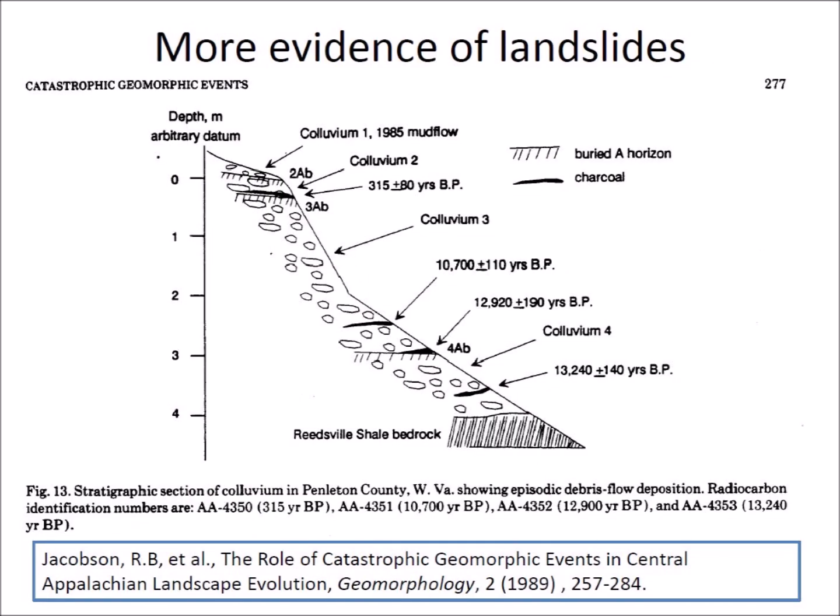The ice boulders that hit solid ground disintegrated explosively with energies equivalent to 13 kilotons to 3 megatons of TNT — equivalent to earthquakes of magnitude 6.0 to 7.54. Jacobson et al. described a landslide at Pendleton County in West Virginia at 12,920 BP that corresponds to the time of the Younger Dryas onset. These landslides are circumstantial evidence of the extraterrestrial impact, but it is the type of effect that would be expected from a hailstorm of massive ice boulders.